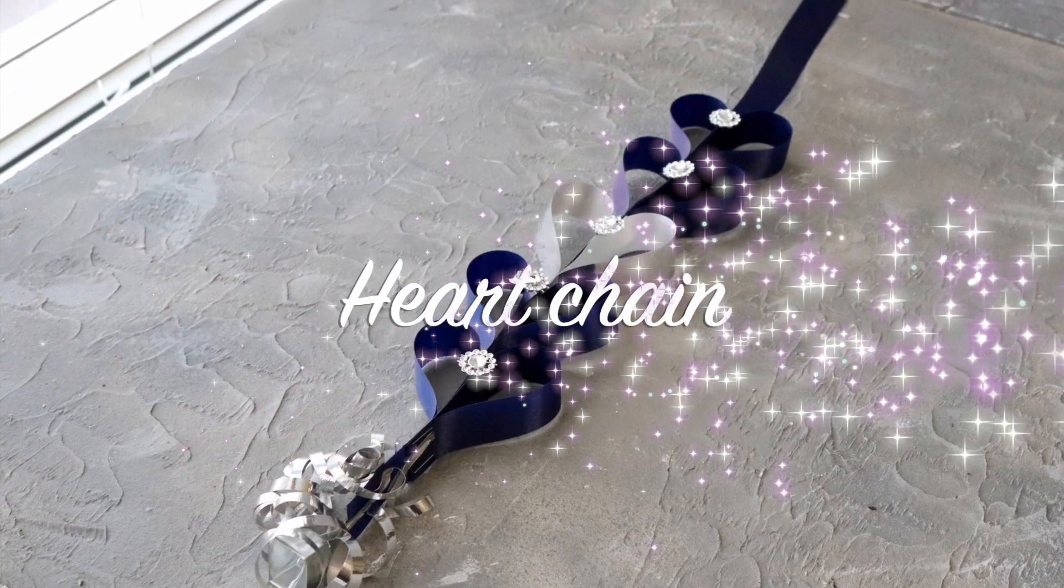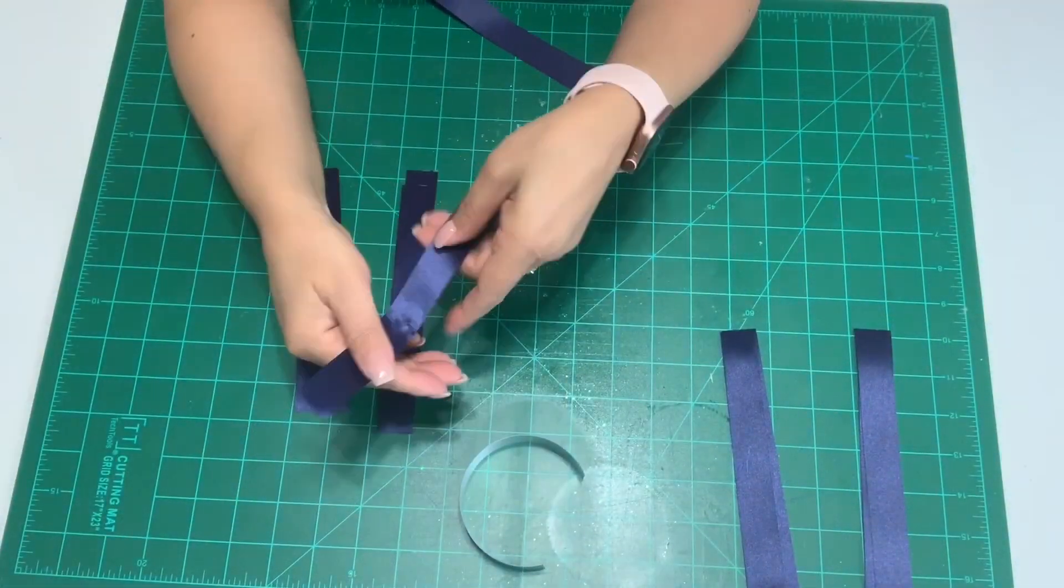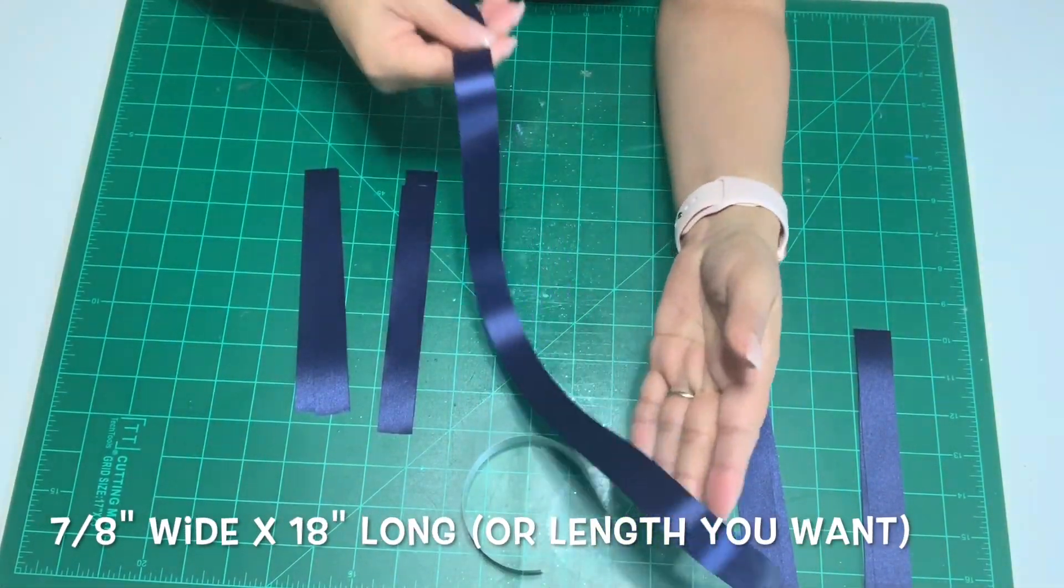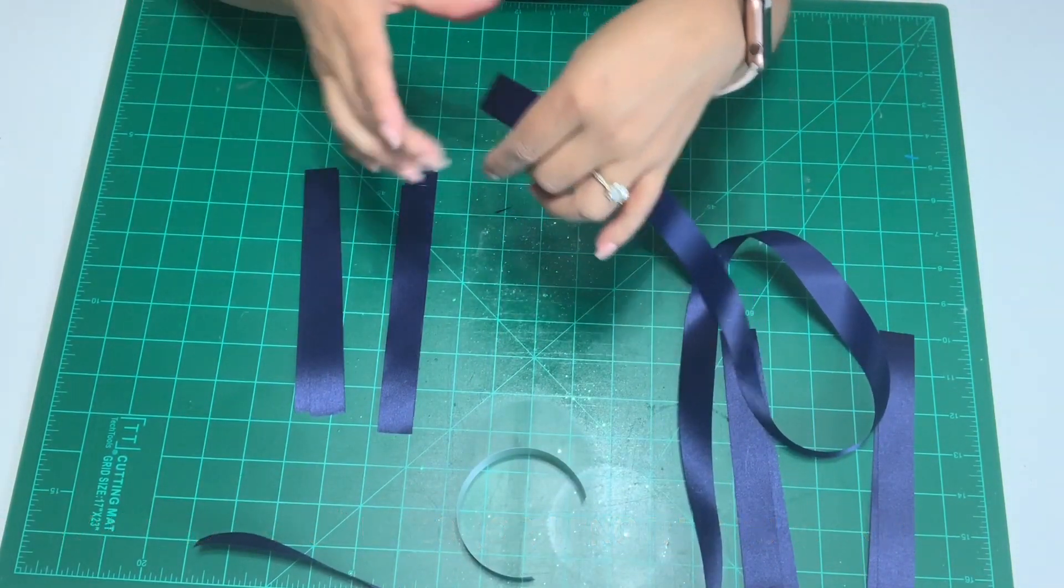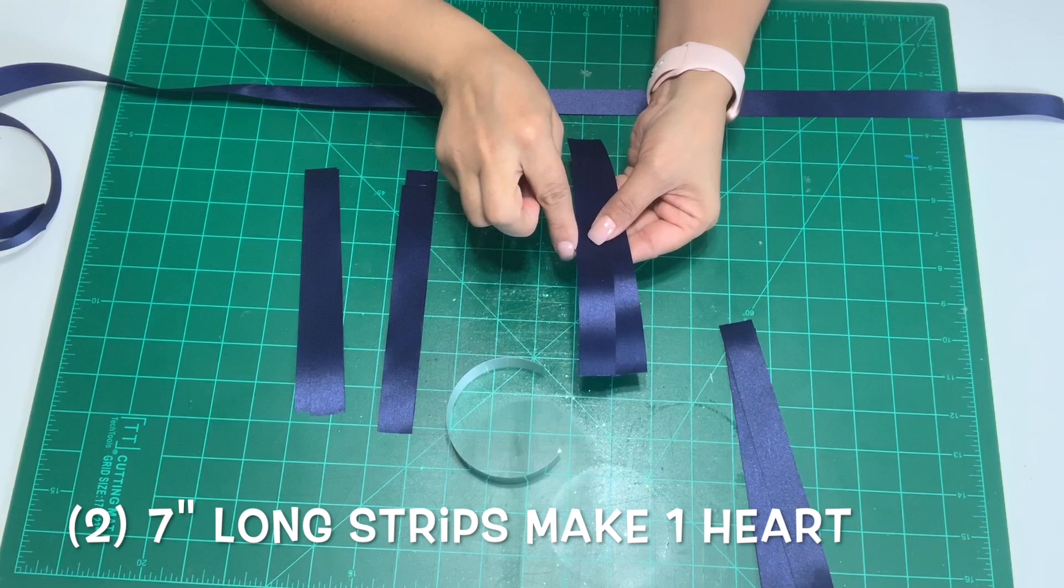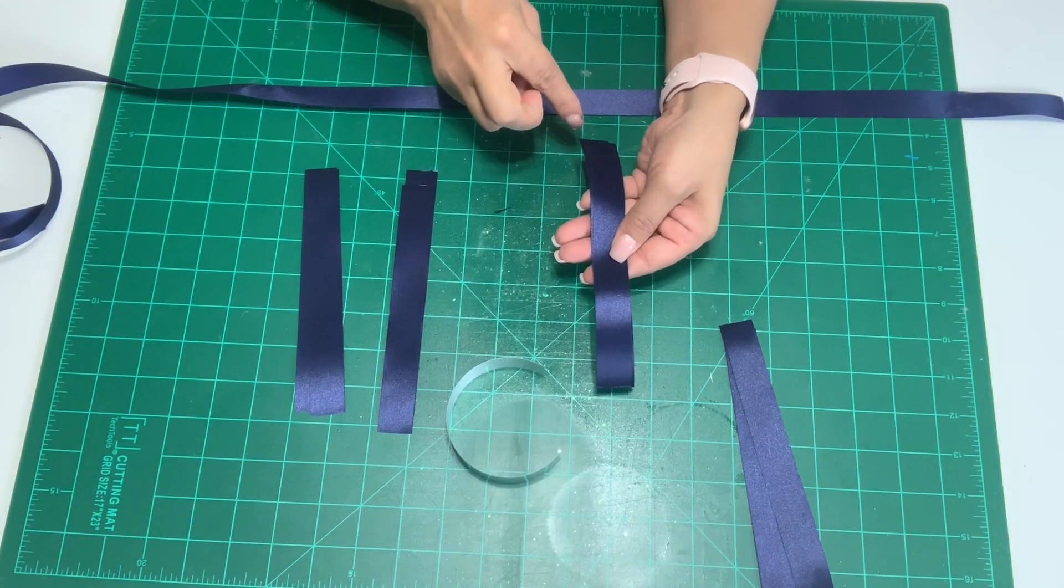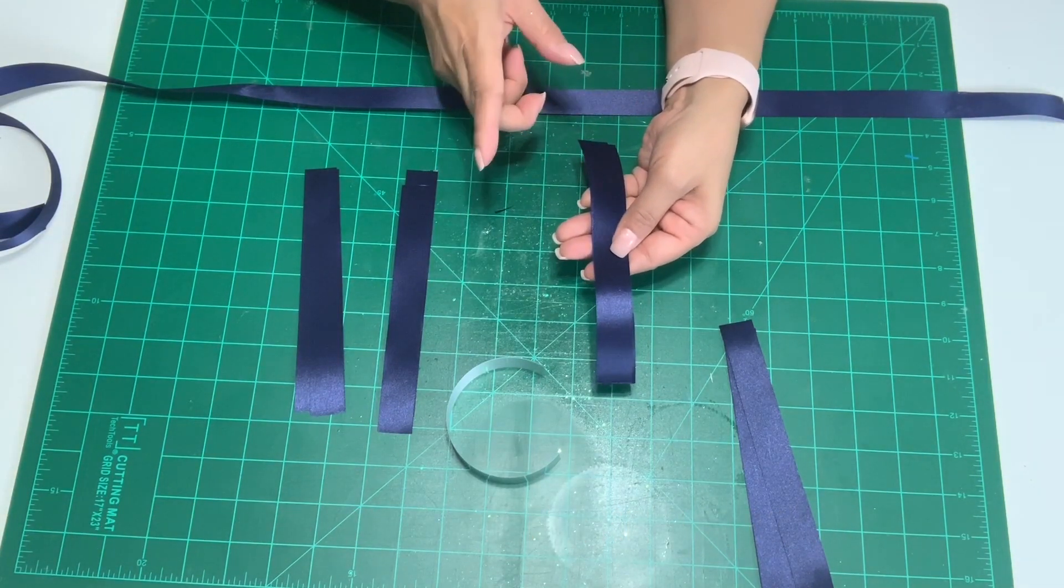Next we're going to be making a heart chain. You'll need a 7/8 inch wide ribbon, cut 18 inches long or however long you want your chain to be. To make one heart you need two 7 inch long strips. Today we'll be making four blue hearts and one silver heart. Therefore I will need eight strips of blue and two strips of silver.